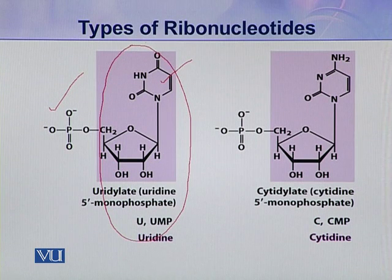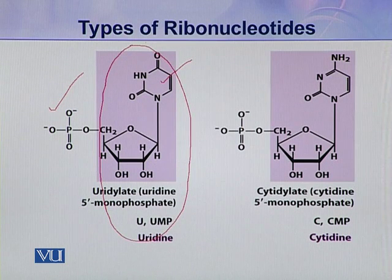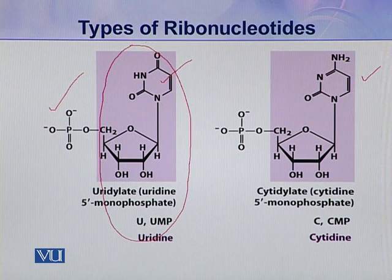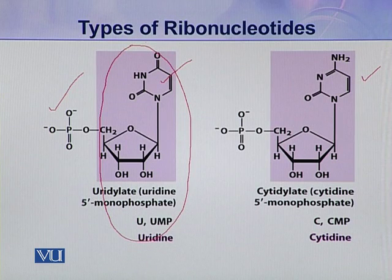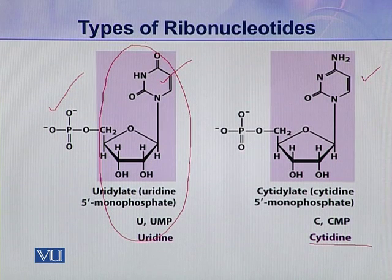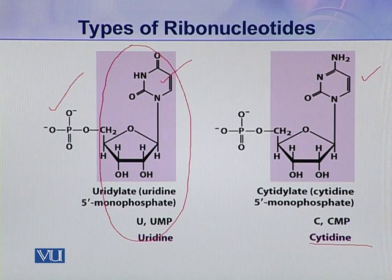One phosphoric acid group is attached to this uridine and it becomes uridylate — the third type of ribonucleotide in nucleic acids. The fourth and last type is cytidilate, where the nitrogenous base is cytosine. When cytosine attaches with pentose sugar it makes cytidine, and when a phosphoric acid is attached to cytidine, the complete nucleotide cytidilate is formed.